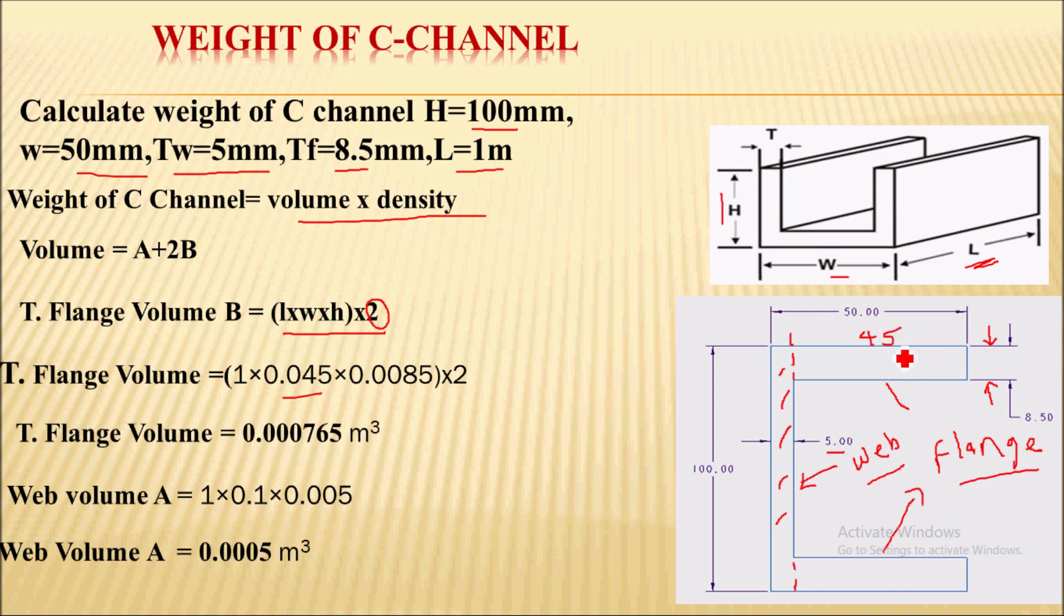...times flange thickness 8.5mm converted to 0.0085m, times 2. After calculating, we get the total flange volume to be 0.000765 m³.